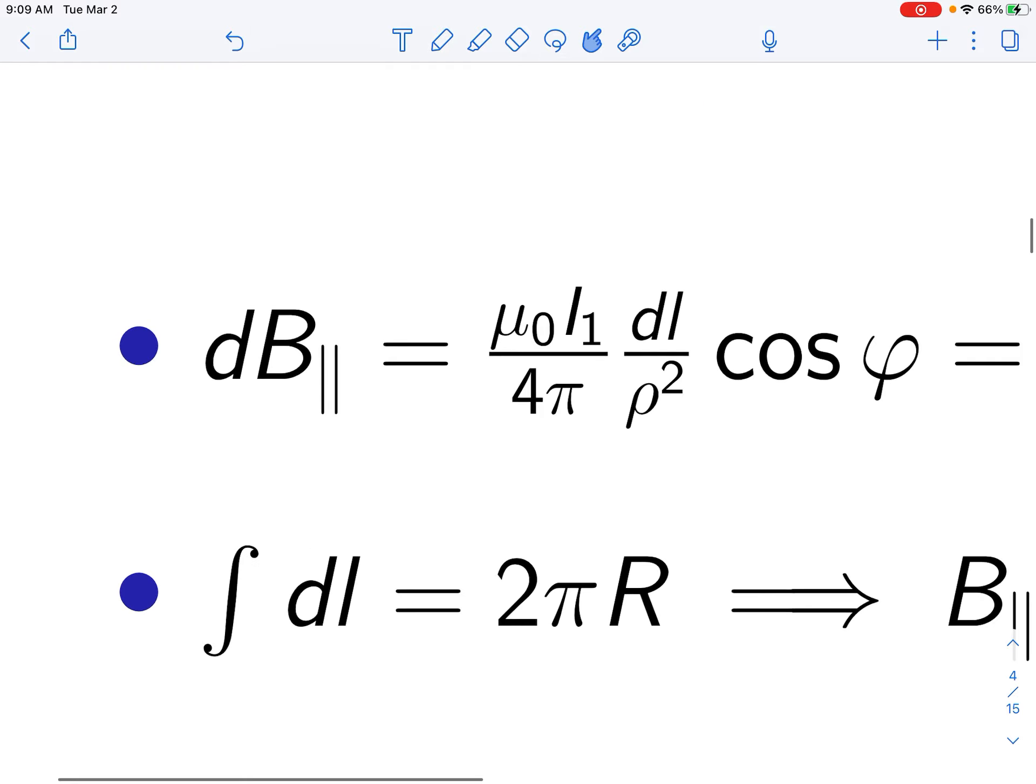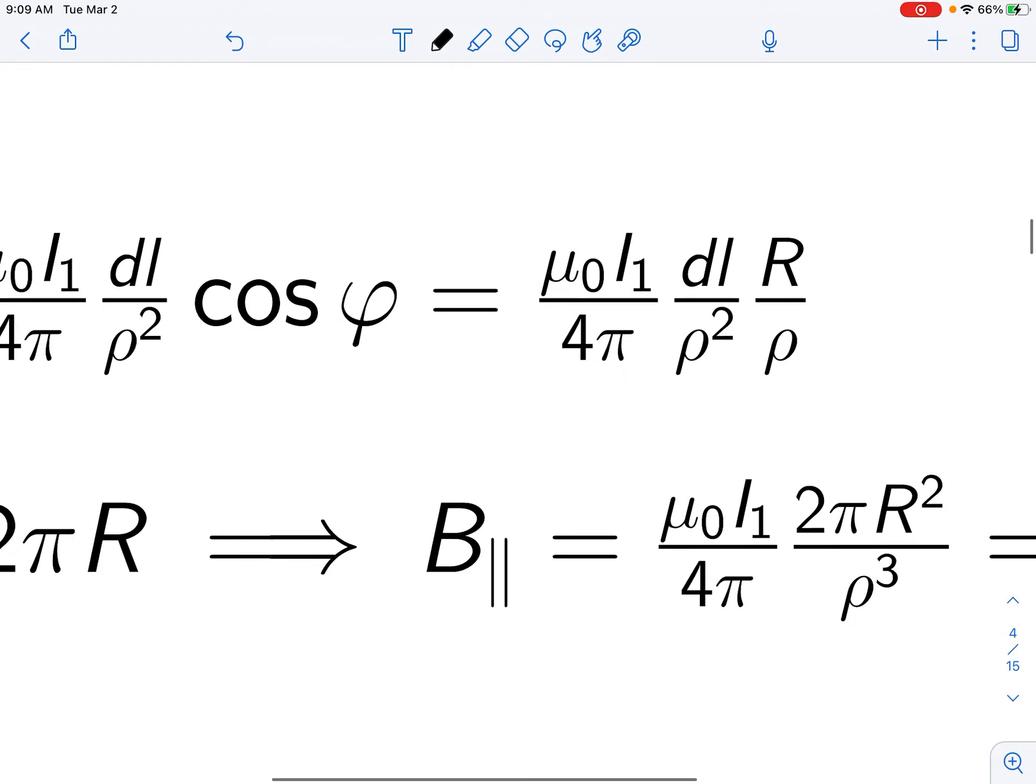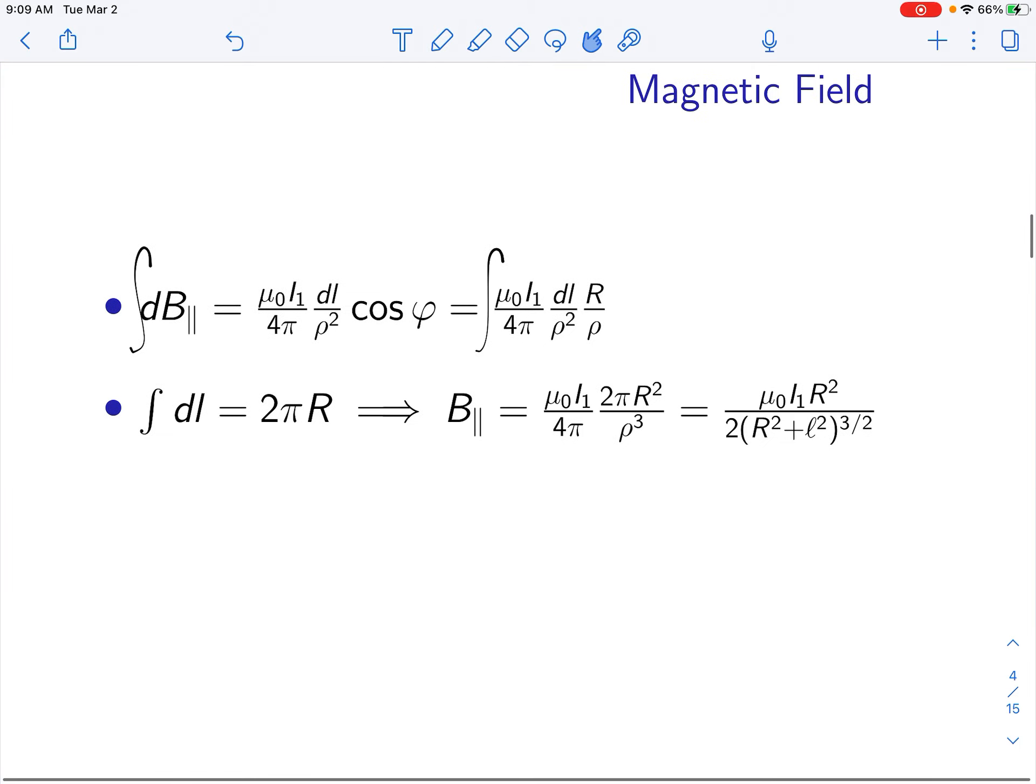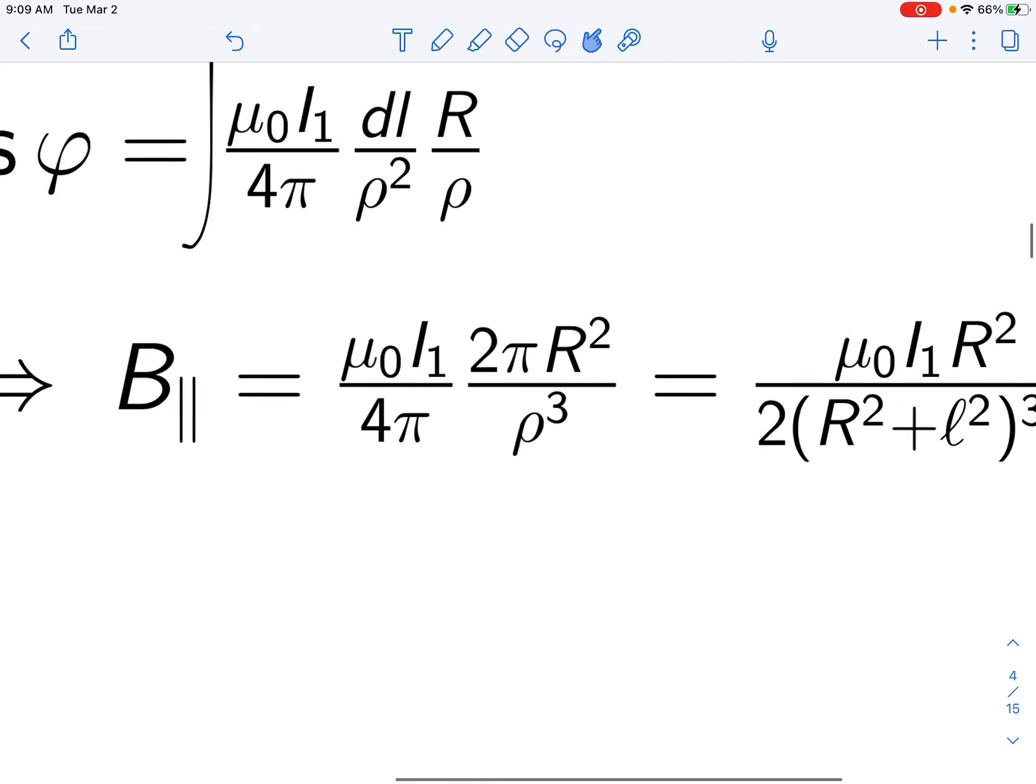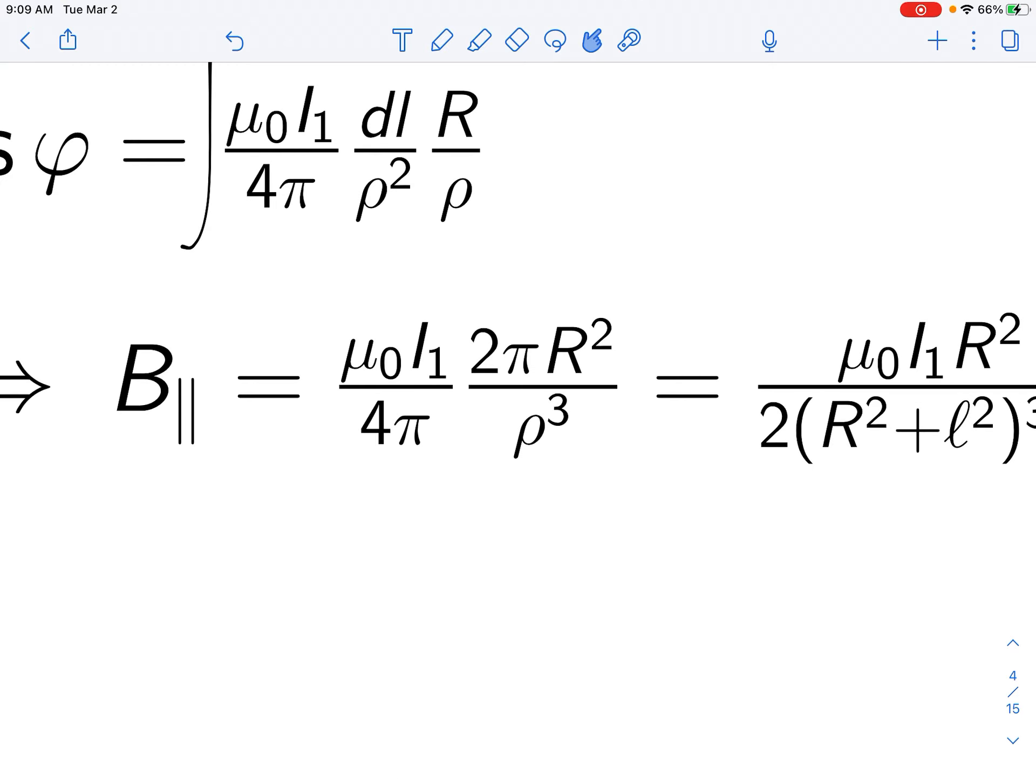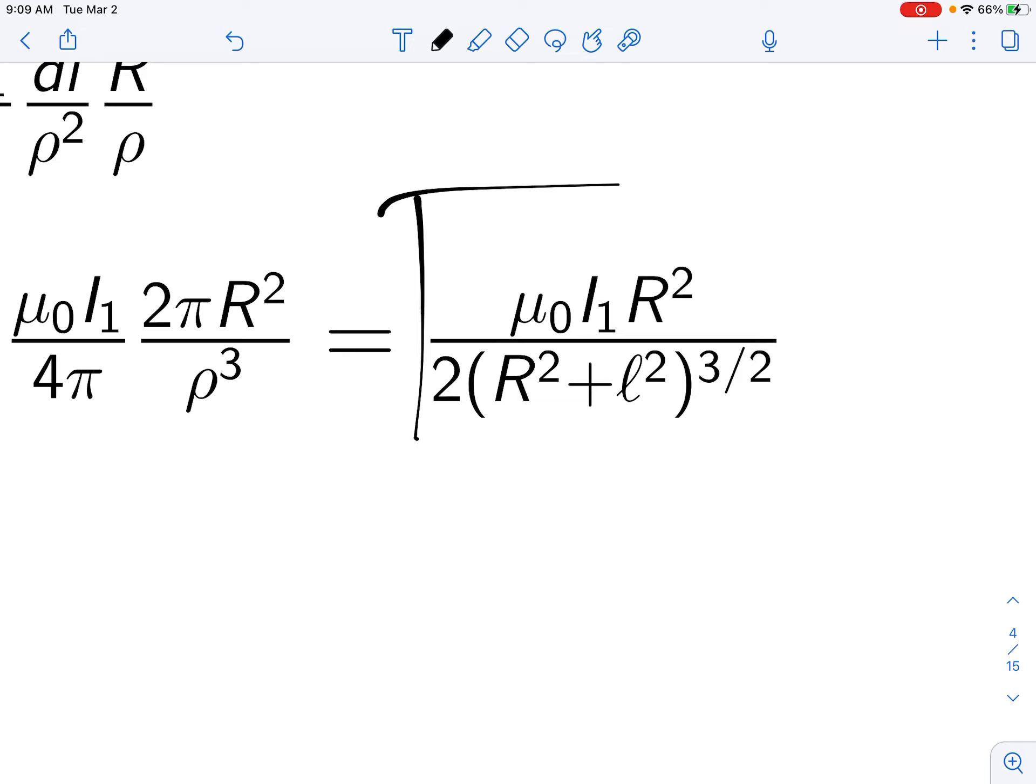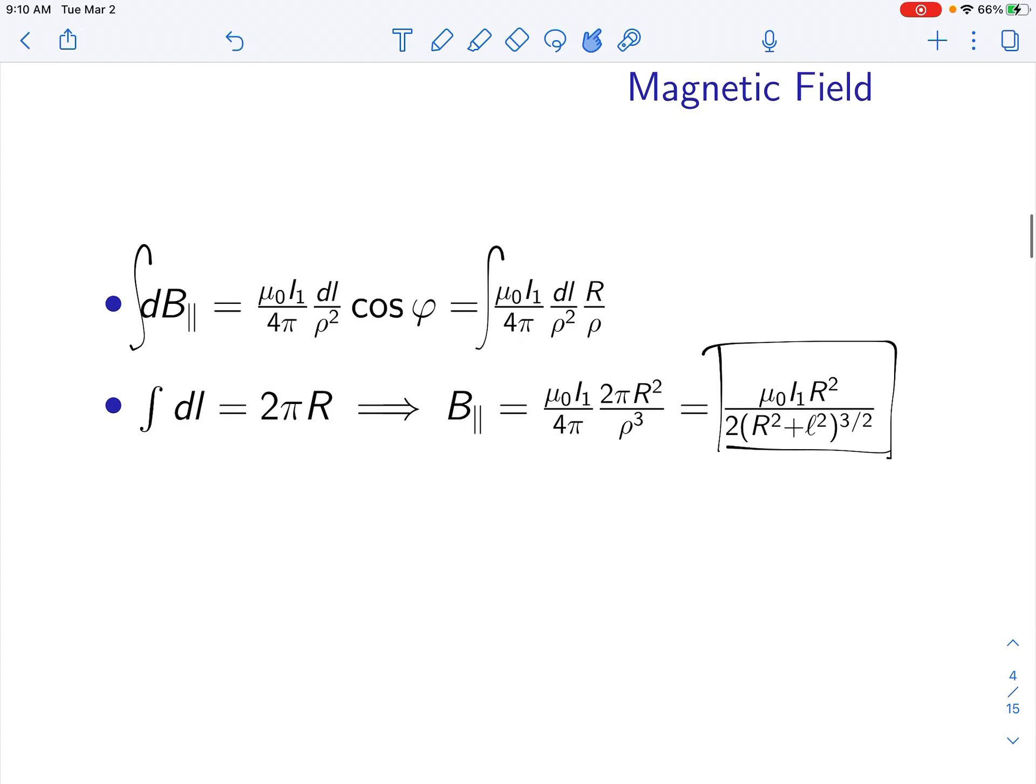Now we're just going to integrate. Since we've already separated the variables, we're going to integrate to find the total magnetic field contribution. On the right side, all we have is the integral of dL, the infinitesimal length element, and that's just going to be the circumference, so 2πR.